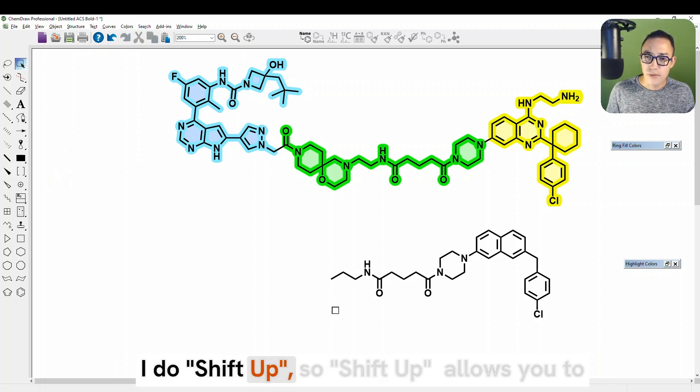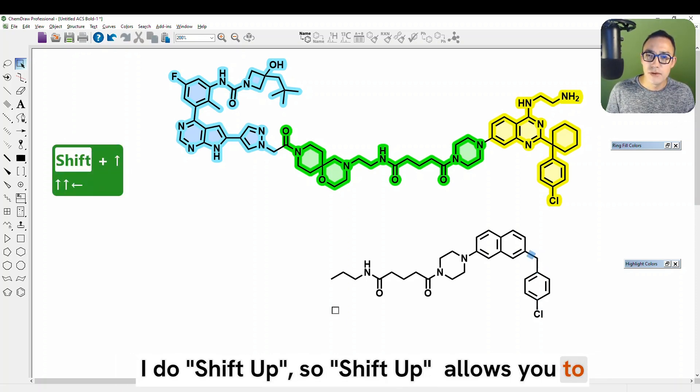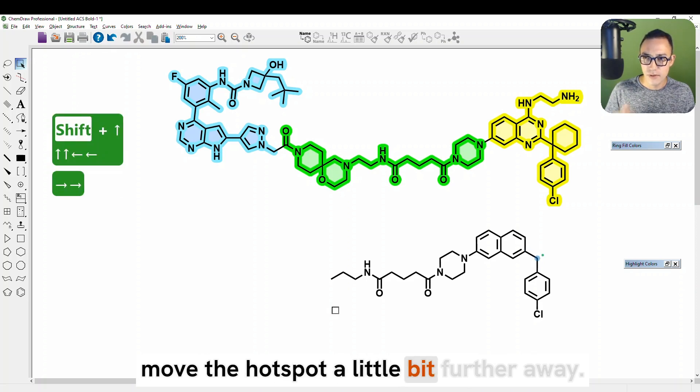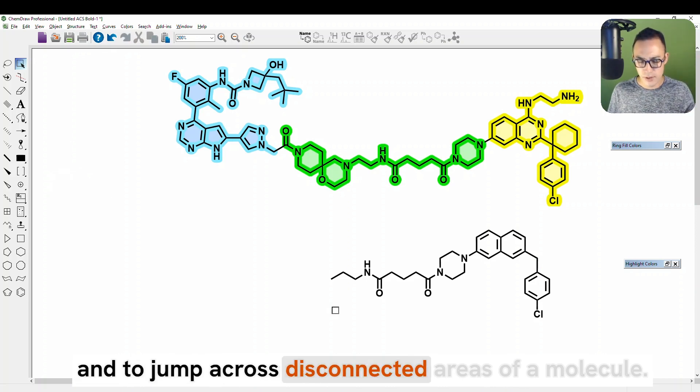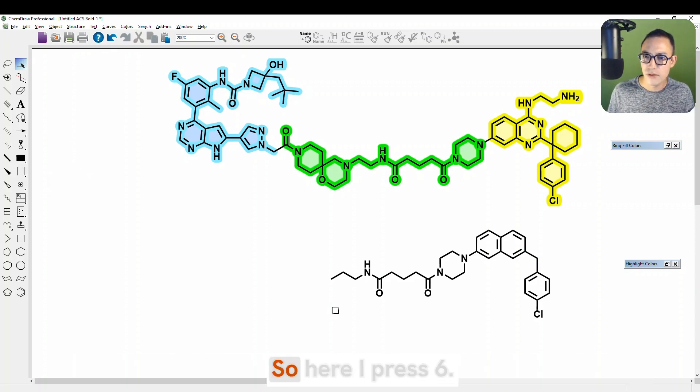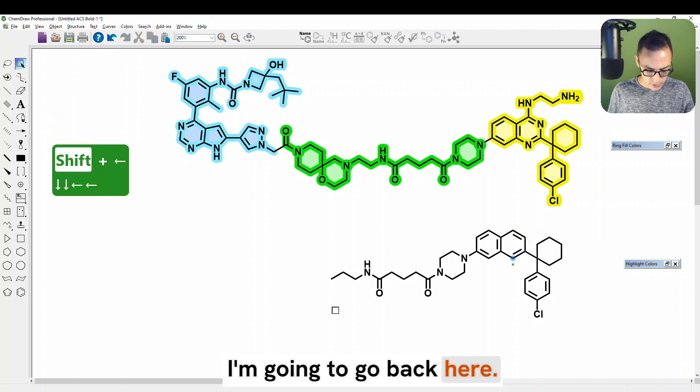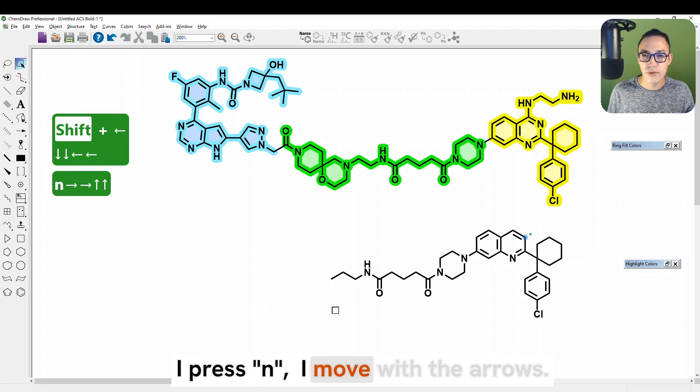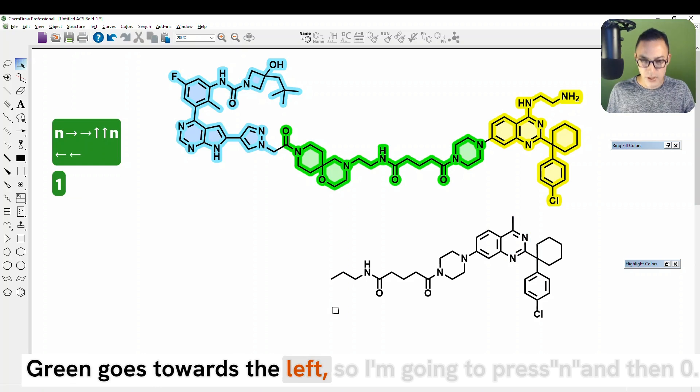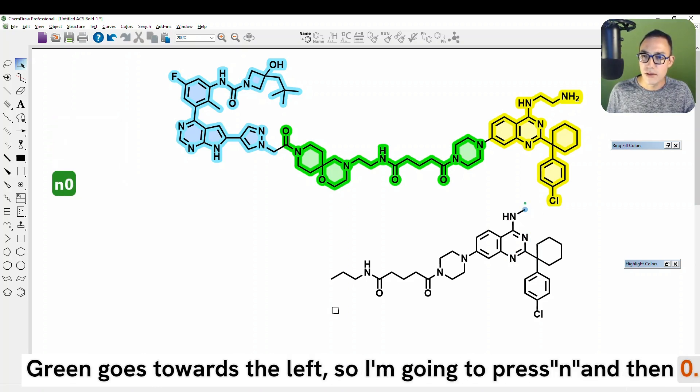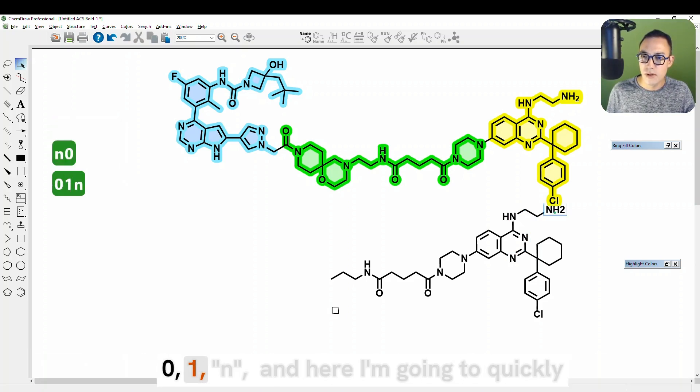I do shift up. So shift up allows you to move the hotspot a little bit further away. It's also going to be able to wrap around the molecule and to jump across disconnected areas of a molecule. So here I press six, I was on the carbon bond, press six, I press shift left, I'm going to go back here. I press N, I move with the arrows, I press N, I move, I press one. Green goes towards the left. So I'm going to press N and then zero, zero, one, N.